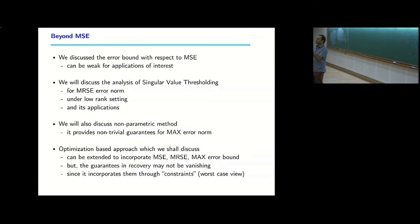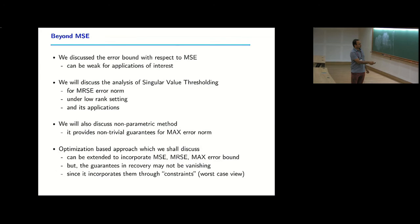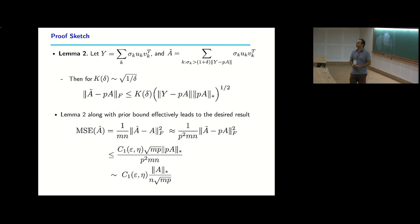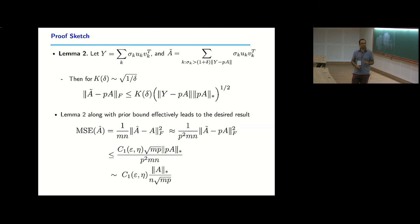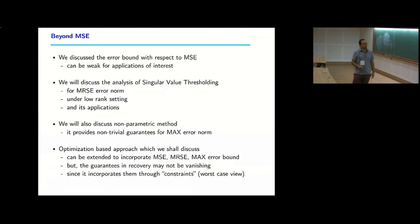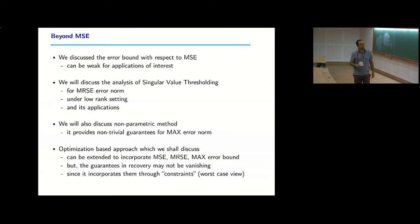To summarize the proof: take your matrix of interest, argue the noise matrix has small spectral norm due to matrix concentration, apply the key inequality relating Frobenius norm to spectral norm and nuclear norm, and you're done. The proof works for Frobenius norm or MSE but not directly for the max-row or entry-wise max norms. For those, the hard singular value thresholding variant and its geometric properties are needed.